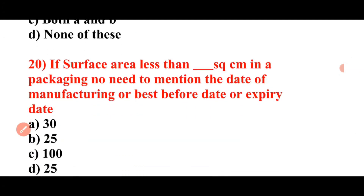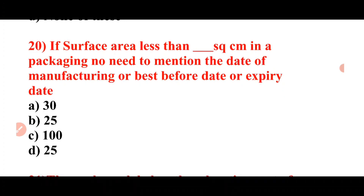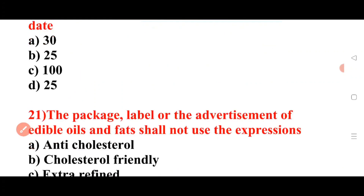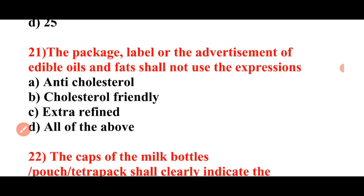Next, question 20: If the surface area of packaging is less than how many square centimeters, there is no need to mention the date of manufacturing, best before date, or expiry date? Options: 30 square centimeters, 25, 100, or 25. Answer: A is the correct answer — 30 square centimeters.